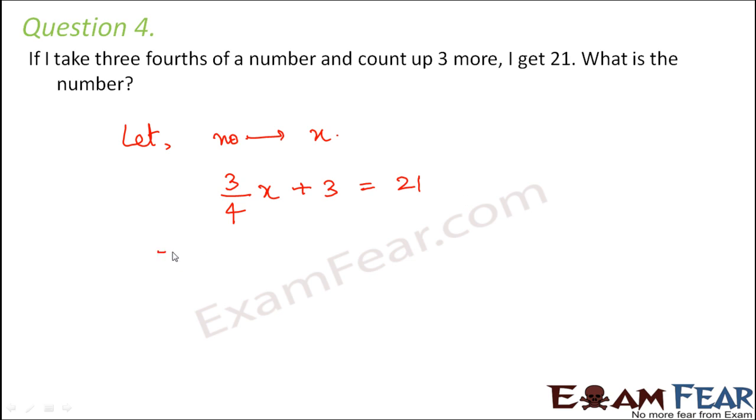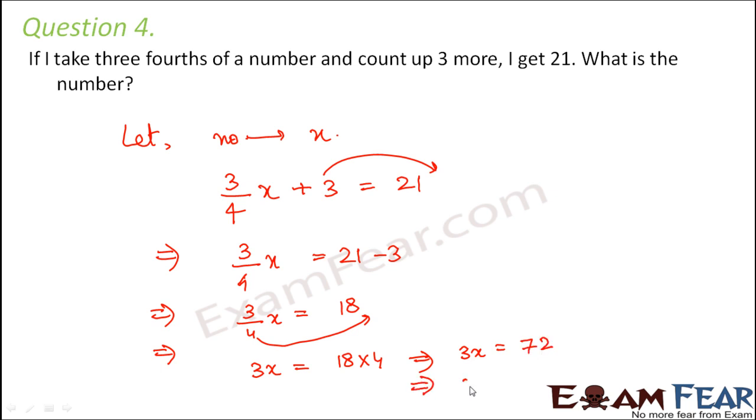This is our equation and we have to find X. So let us first move this 3 to right hand side. So we get 21 minus 3. So we can say 3 by 4 X is equal to 18. Or this 4 can move this side. So this becomes 3X is equal to 18 into 4. Or we can say 3X is equal to 18 into 4 is 72.